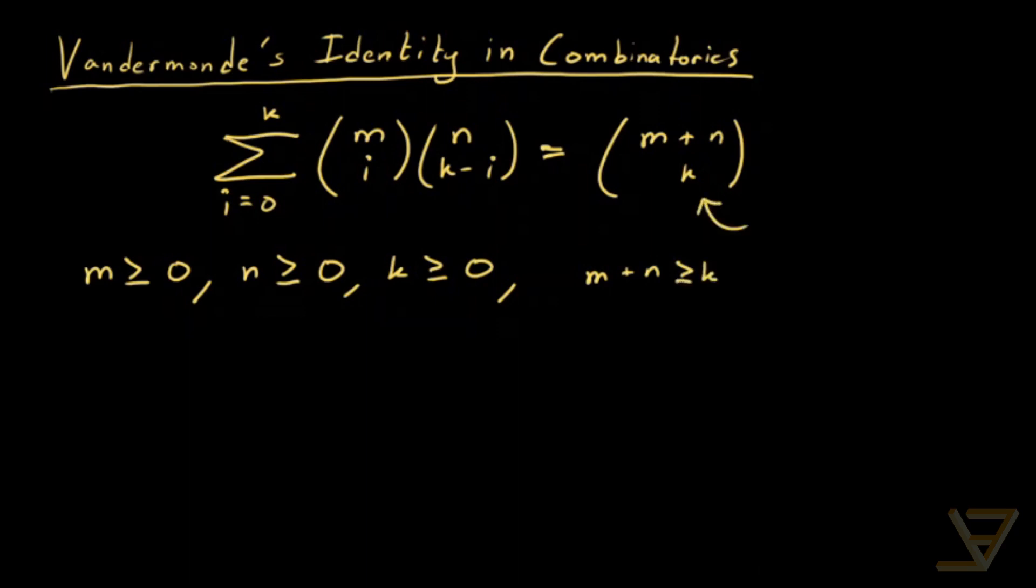We're going to have m plus n greater than or equal to k so that this binomial coefficient here makes sense. And there is a sort of convention that we're going to use but I'll mention that at the very end so that it's not confusing right now.